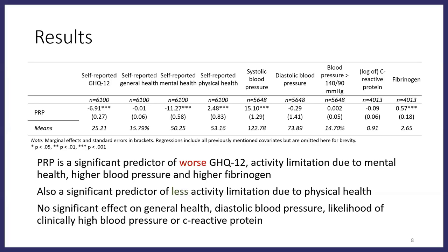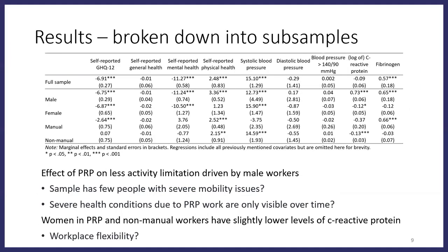Interestingly, we also see that PRP predicts less activity limitation due to physical health. There's no apparent reason for this, but it's possible our sample doesn't contain people with severe mobility issues, or that severe impacts on health wouldn't be seen until someone had worked in PRP for a very long time. Several covariates also predict these health outcomes, including gender and whether you work in manual or non-manual employment, so we decided to look at the same regressions within specific subsamples.